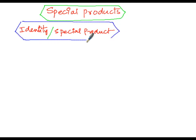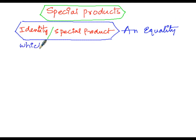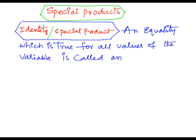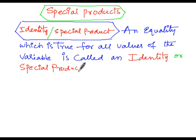An equality which is true for all real values of the variable present in it is called an identity, or a special product. Now let us consider one example or illustration to understand this definition.